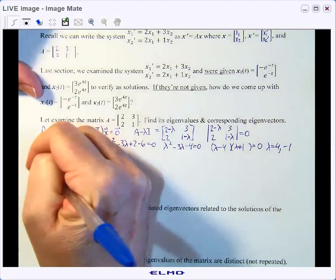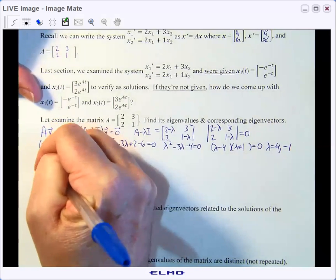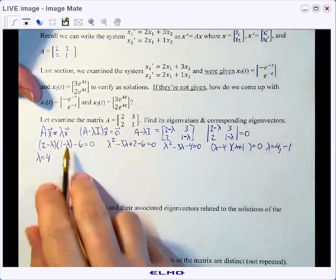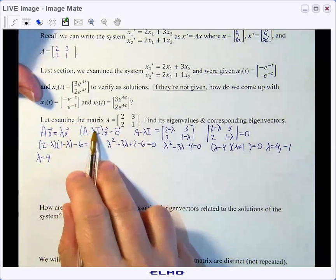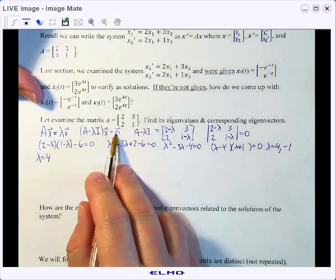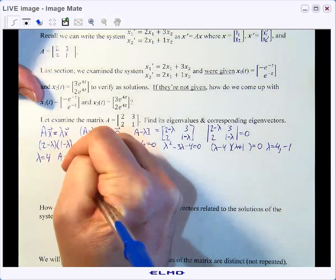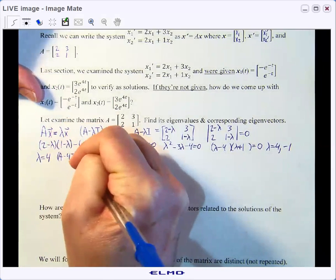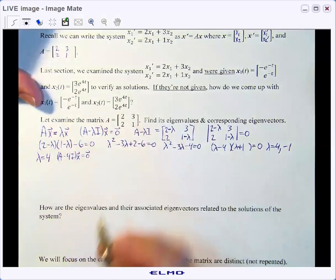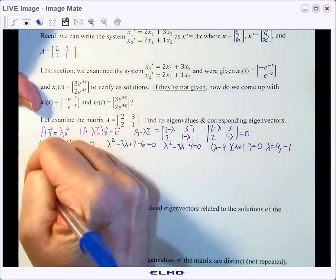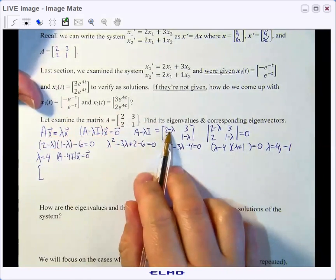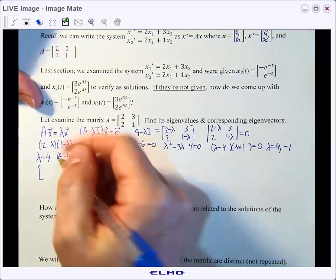Let's see what happens when we put in the eigenvalue of 4. Again, we're looking for the A minus lambda I times the x equals zero. So if I do A minus 4I times the x vector is equal to the zero vector, we're setting up the system, sticking a 4 in here and augmenting by the zero vector.